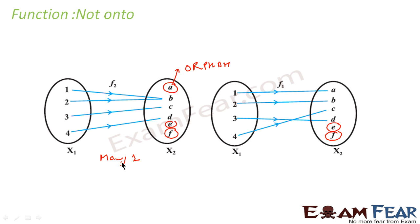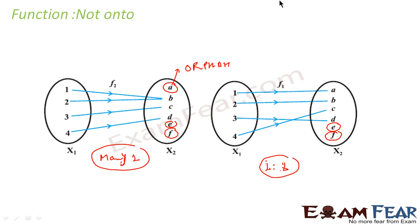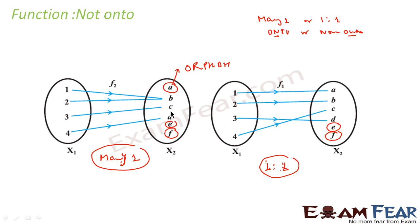So there are two classifications of a function: many-one or one-one, based on whether multiple or single injections are coming in; and onto or non-onto, based on whether there is an orphan element in the image or not. Based on these two, there is one more type — a function that is both one-one and onto.